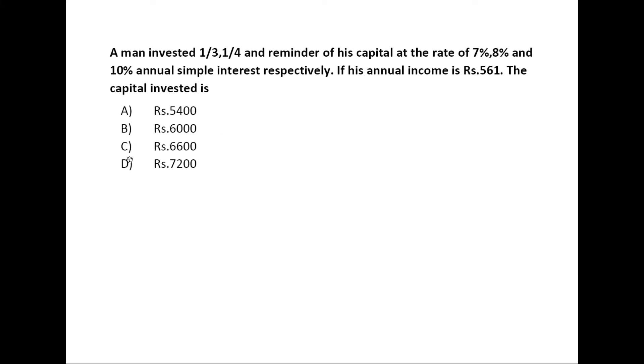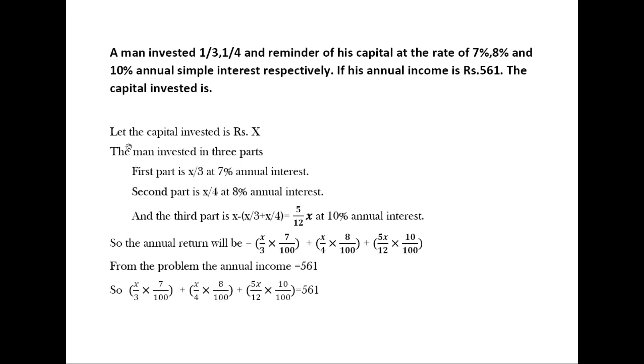Let the capital invested be rupees X. The man invested in three parts: first part is one-third, that is X by 3, at 7% annual interest; second part is one-fourth, that is X by 4, at 8% annual interest.